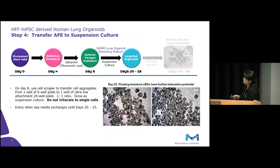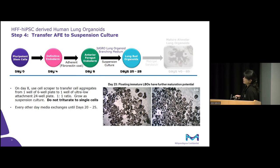After day eight, this is when you transfer your cell aggregates using a cell scraper from one well of a six-well plate to one well of an ultra-low attachment 24-well plate, at a one-to-one ratio. From one well, you get over 50 to almost 100 lung bud organoids — quite a lot. If you want to generate more, you simply scale up in terms of the number of wells. These aggregates are grown as suspension cultures in ultra-low attachment plates — we do not recommend dissociating them to single cells. It's very important at this stage that they grow as suspension cultures.